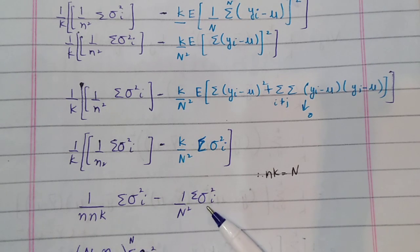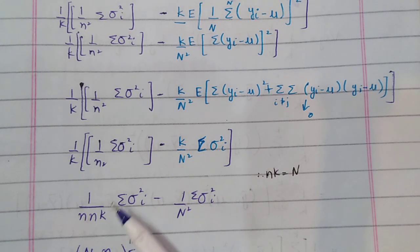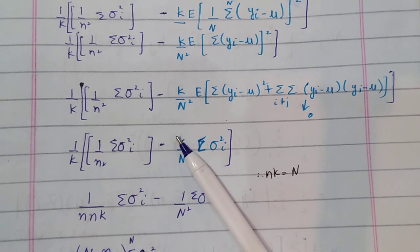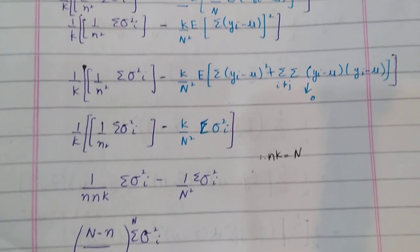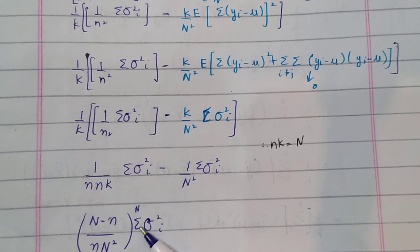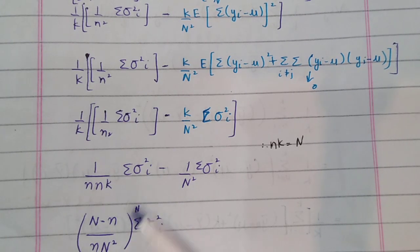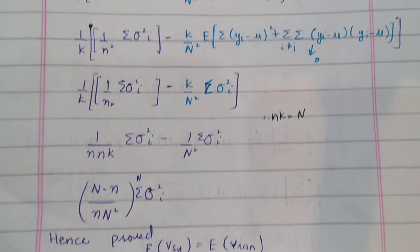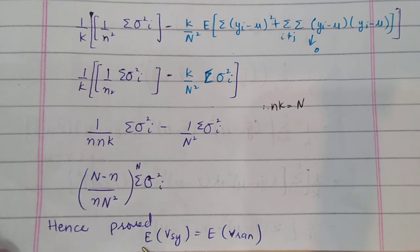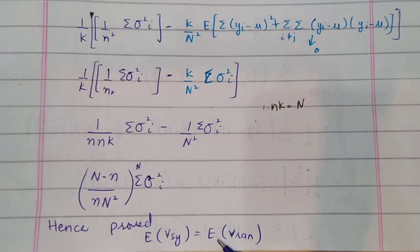We simplify: here we have sigma square and here we have k and n-square. We break the n-square, and multiplying this out we have k. This proves that the systematic variance is equal to the random variance. Thank you.